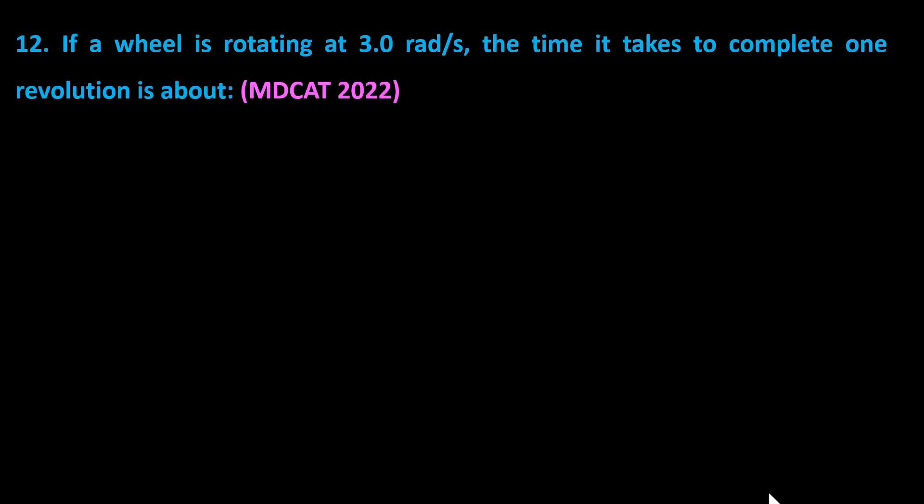If a wheel is rotating at 3 radians per second, the time it takes to complete one revolution is about: